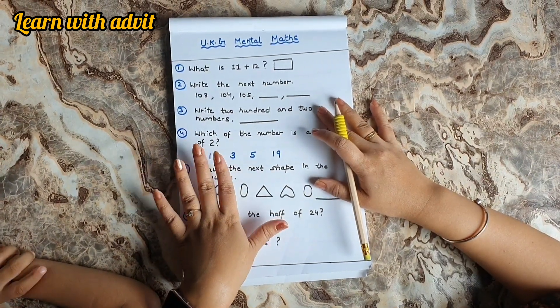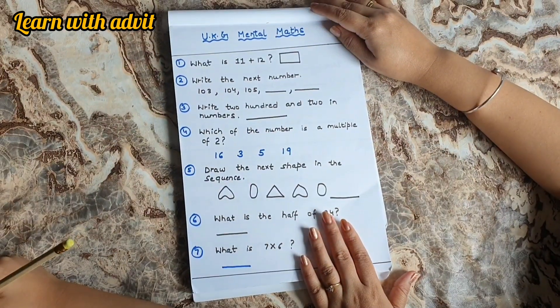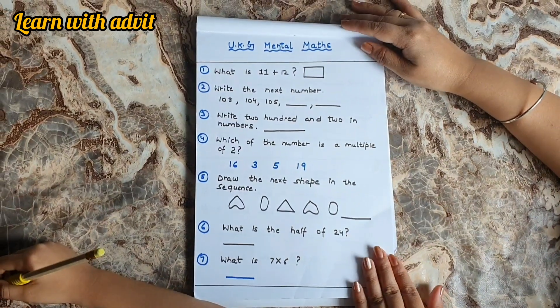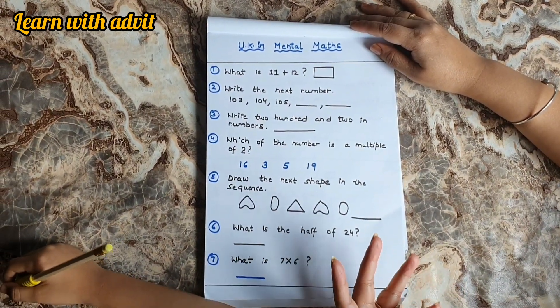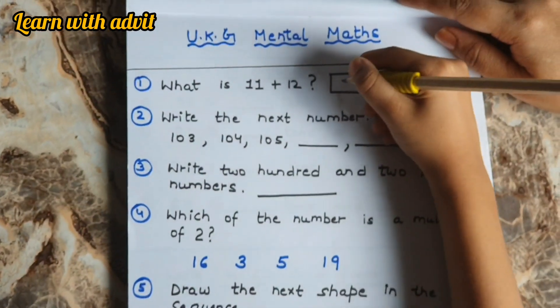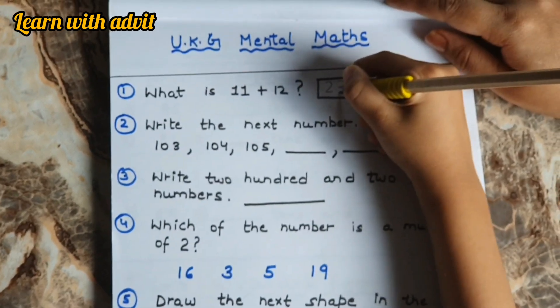They can do mental maths on fingers and do it very fast. So let's get started. This is the first sheet, come on start doing it. What is 11 plus 12? Mental maths means you have to do it fast on your fingers. 11 plus 12 is 23. Very good.